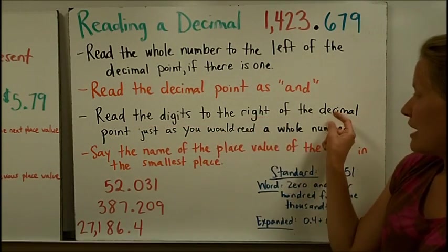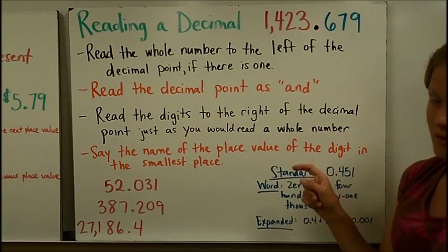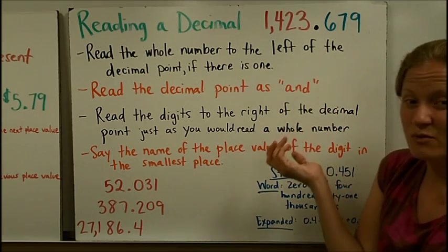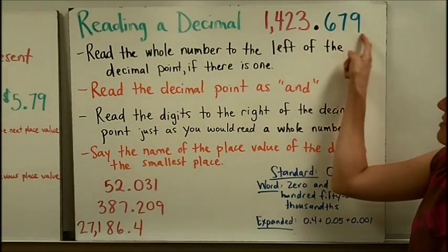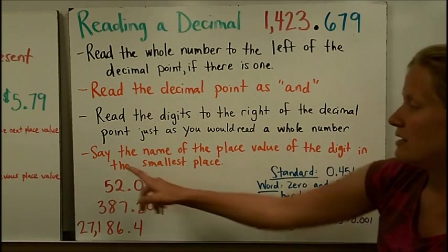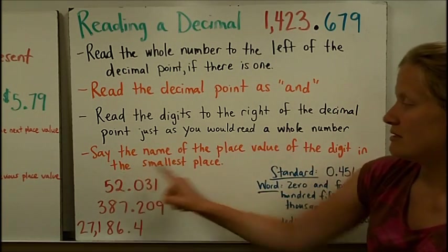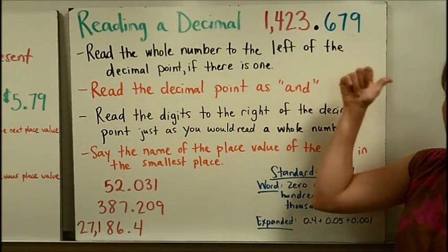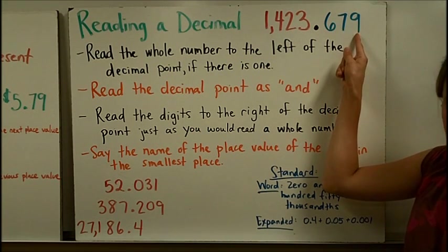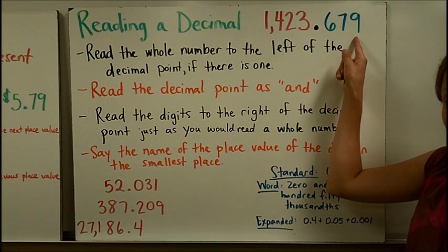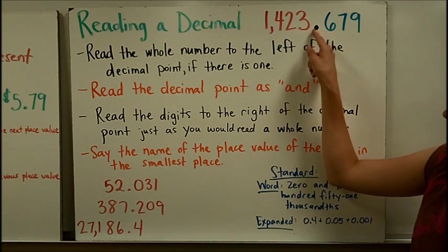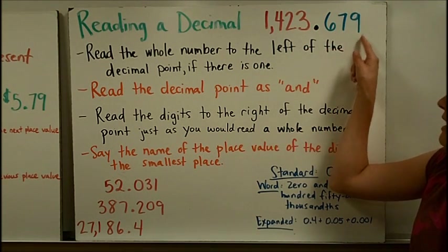Read the digits to the right of the decimal point, just as you would read a whole number. So forget about the whole number piece for a minute, this part. And you're going to read these digits just like you would read them normally if you're reading a whole number. So these blue digits after the decimal are, say, six hundred seventy-nine. One more step, I'm not done. Say the name of the place value of the digit in the smallest place. Well, the digit in the smallest place, it's the one furthest to the right, is this nine in the thousandth place. Remember, tenths, hundredths, thousandths. So I'm going to end my number by saying thousandths. Let's put it all together. One thousand four hundred twenty-three and six hundred seventy-nine thousandths.